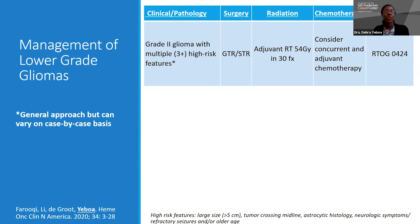Our next group — grade 2 gliomas with multiple high-risk features, at least three or more — regardless of gross total or subtotal resection, can be offered adjuvant radiation therapy at 54 Gy. The initial trial used 50.4 Gy with concurrent and adjuvant chemotherapy based on RTOG 0424, and we discuss this for certain patients.